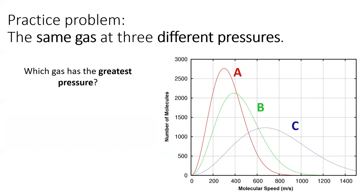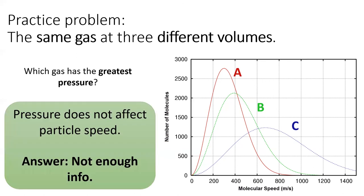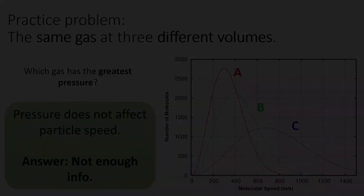Same graph, but the last practice problem. Let's say this graph now represents the same gas at three different volumes. Which sample has the greatest pressure? The answer is that we don't know. Pressure does not affect particle speed. There is not enough information to determine which gas has the highest pressure.